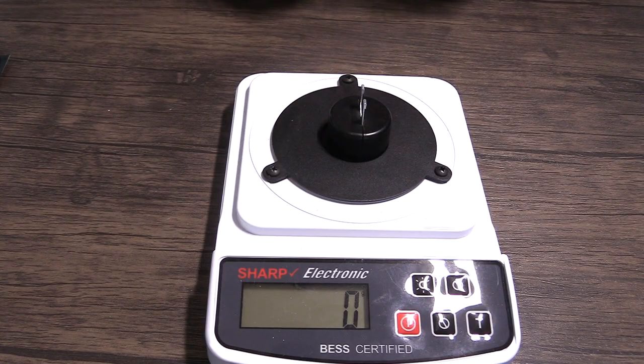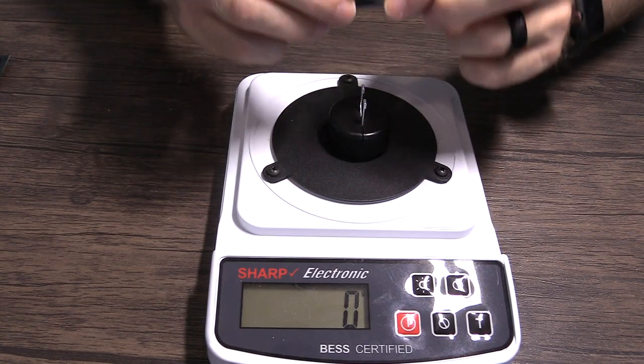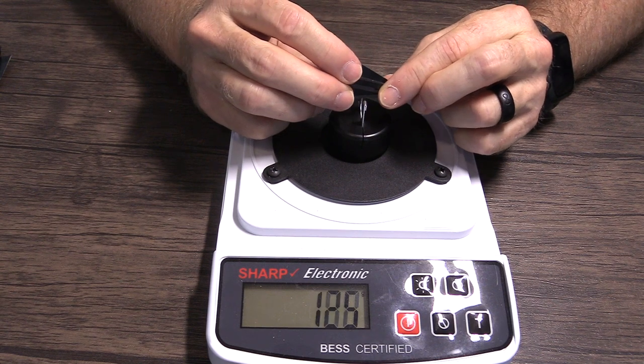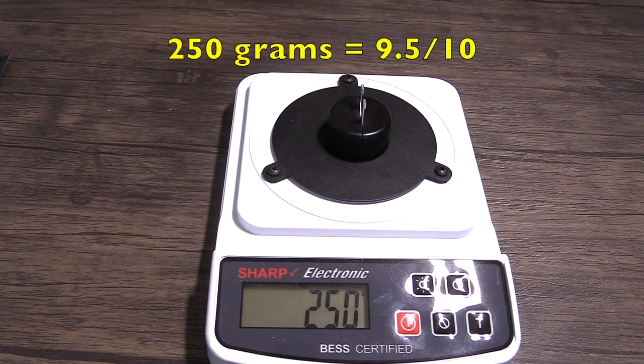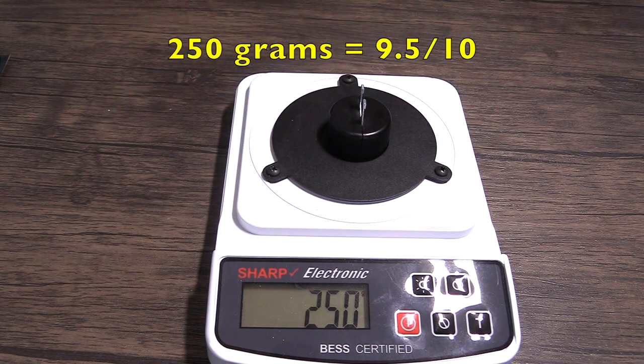First, let's test the sharpness of the 26 degree single bevel as it comes in the package. It took 250 grams of force to cut through the copolymer wire. That's a 9.5 on a 10 point scale.